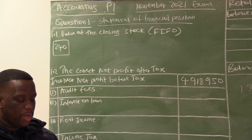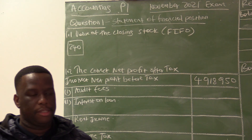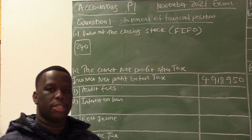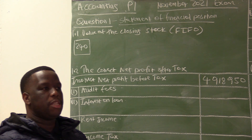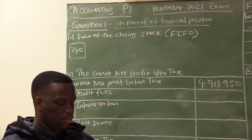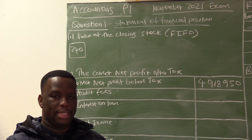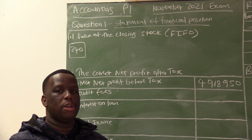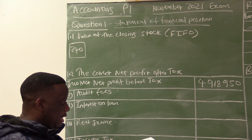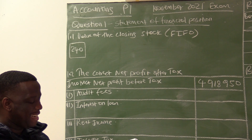When calculating closing stock value using the FIFO method, the older stock is sold first, so what remains should be the stock last purchased. The last purchase was on 18 May 2021. With FIFO, you start from the bottom — the most recent purchase — and work upward, guided by the number of units in closing stock.